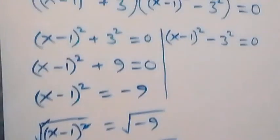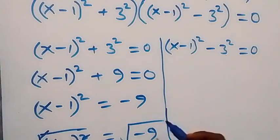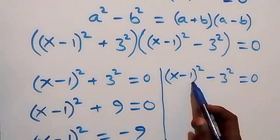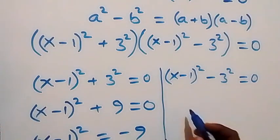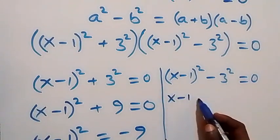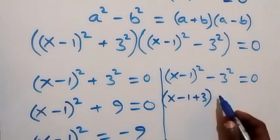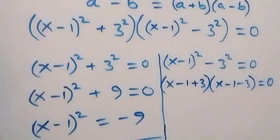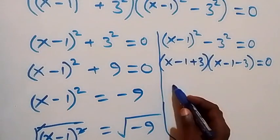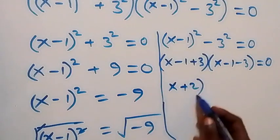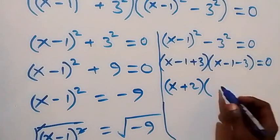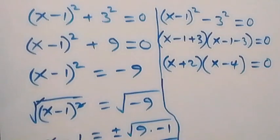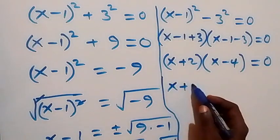From the second factor, we have x minus 1 squared minus 3 squared equals zero. This is a squared minus b squared, where x minus 1 serves as a and 3 serves as b. So it becomes x minus 1 plus 3 multiplied by x minus 1 minus 3 equals zero, which gives x plus 2 multiplied by x minus 4 equals zero. So either x plus 2 equals zero or x minus 4 equals zero.